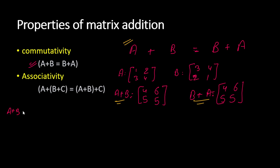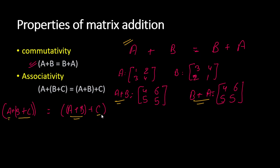Now let's check associativity. It states that A + (B + C) = (A + B) + C. On the left-hand side, we first compute B + C and then add A. On the right-hand side, we first compute A + B and then add C. Let's take a matrix C as [3, 2; 1, 2].